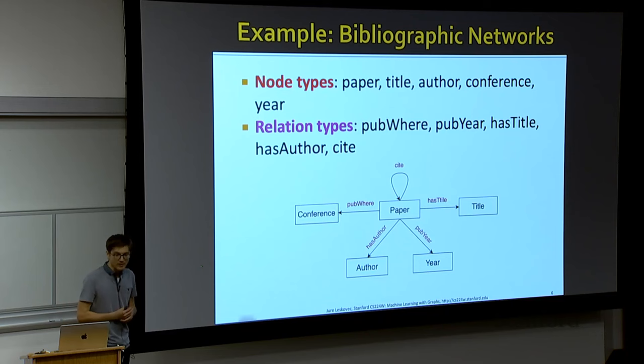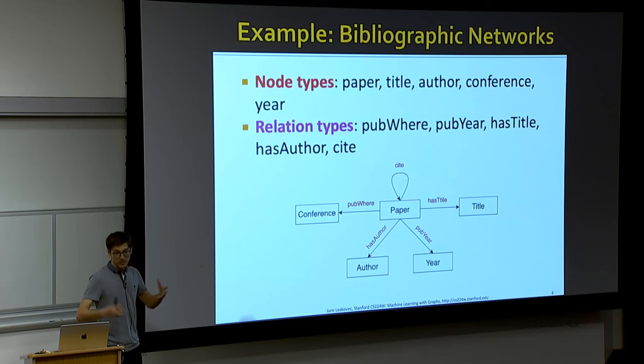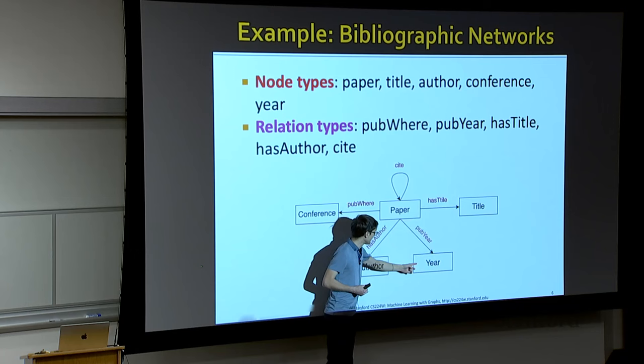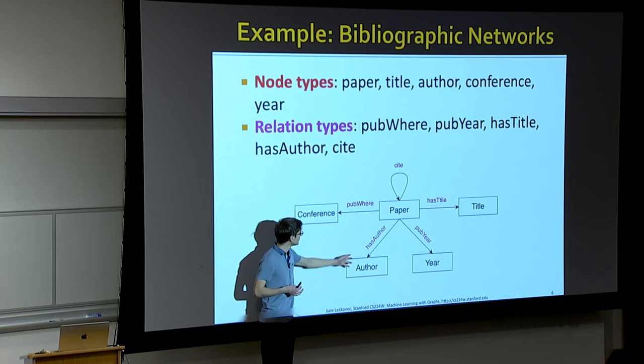What would be one example of a knowledge graph? For example, if you are answering questions about academia and papers, a bibliographic network can be thought of as a knowledge graph. You have conferences, papers, titles, year of publications, and authors. Papers have citations to each other. This is a schema of a heterogeneous knowledge graph with five different node types and five different relation types — encoding all we know about all the publications ever published.